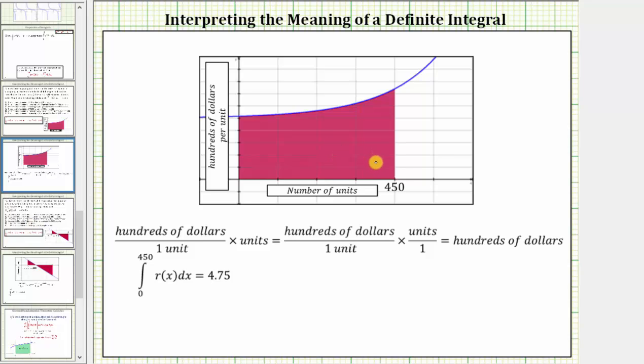We know to find this area geometrically, we have to multiply the units along the vertical axis by the units along the horizontal axis. If we do this, we would have hundreds of dollars per unit times the number of units, or just units.